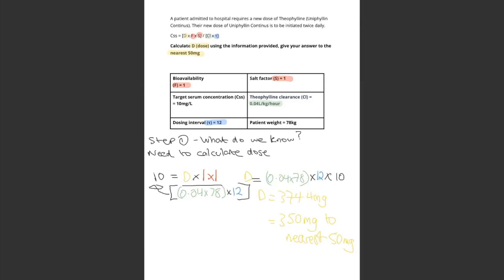Hello everyone, question 33. This is an example where we need to calculate a new Theophylline dose. With this question, you'll get a bunch of information and you need to put the right information into the equation and then calculate the dose. The best advice I can give is that you should put everything that you know and then calculate what you don't know. So what we do know is the bioavailability, the salt fraction, the target concentration, and the patient's weight.